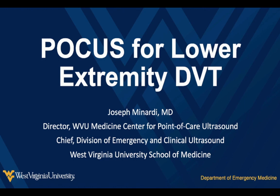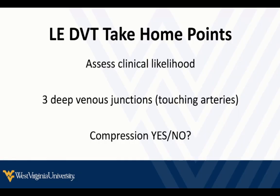We're going to start with lower extremity DVT and then talk about how we can translate those skills to upper extremity as well. Here are the take-home points, repeated often and loudly: first, engage your brain in assessing the clinical likelihood of DVT, because that's going to influence your decision-making and help you make sense of the ultrasound findings. All deep veins we care about — in both upper and lower extremities — always run in contact with arteries. If you don't see a deep artery touching the vein, it's probably not the deep vein.